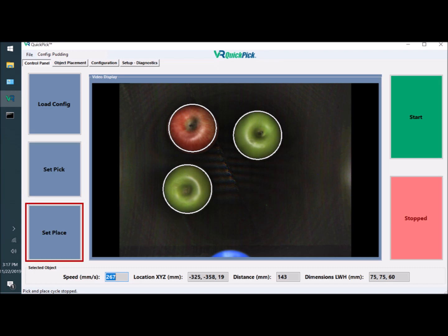Then you set the place zone, or, as in this case, you can place objects in a specific XYZ location. On the right hand of the screen, you have your start button and your stop button.